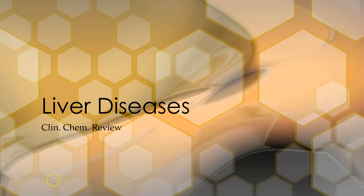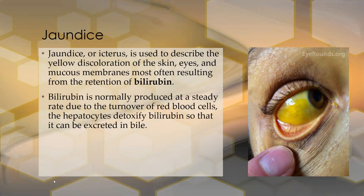Hi, this is Dr. Abe with a clean camera view on liver diseases. So let's first talk about jaundice. Jaundice, or icterus, is used to describe the yellow discoloration of the skin, eyes, and mucous membranes, which is most often resulting from the retention of bilirubin.